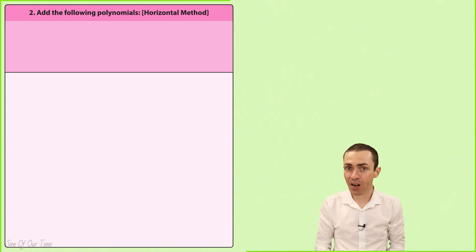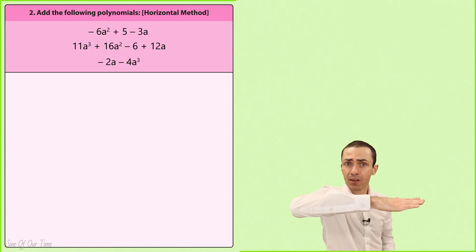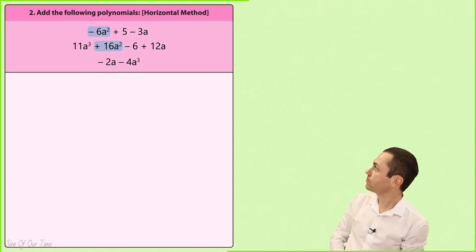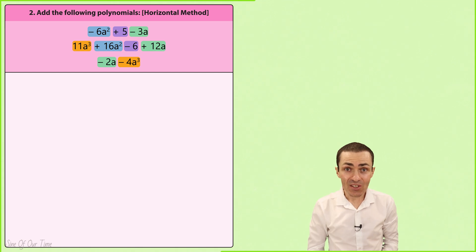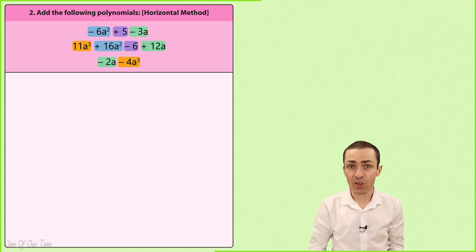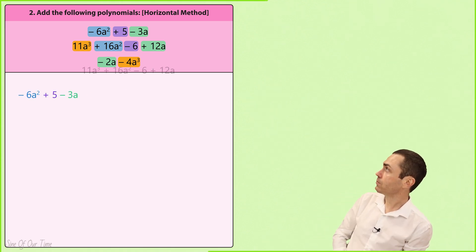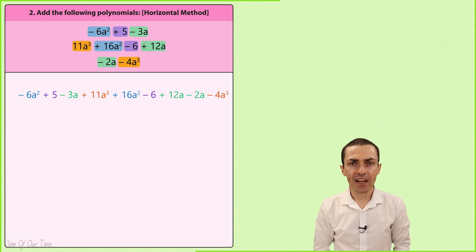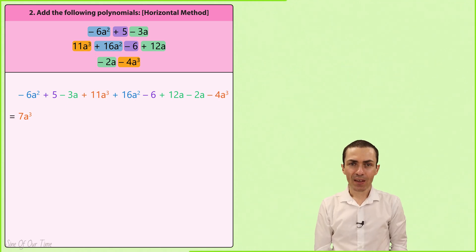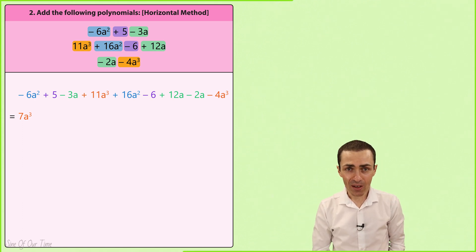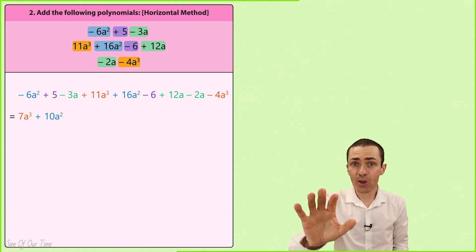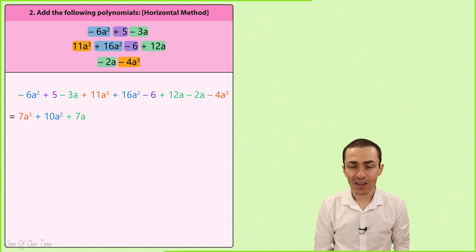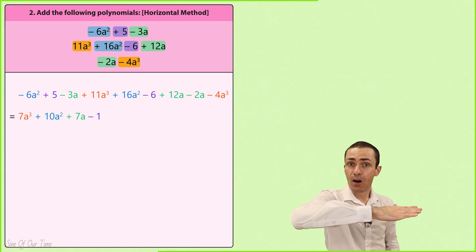Okay, let's try another example where we are asked to add three polynomials starting with the horizontal method. First let's use colors to highlight all of the like terms, then use these colors in the first line of our calculations to represent the like terms. Since 3 is the highest exponent of a, we add up all of the terms that contain a cubed, which gives us 7a cubed. Then we add up all of the terms that contain a squared, which gives us 10a squared. Then all of the terms that contain a, which gives us 7a, and finally all of the constant terms, which gives us negative 1. And now we have added these polynomials using the horizontal method.